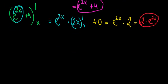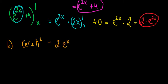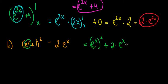In part b we have e to the power of x plus 1, all to the power of 2, minus 2 times e to the power of x. Opening the brackets from the first term we have e to the power of x squared, plus 2 multiplied with e to the power of x and with 1, then plus 1 squared, minus 2 times e to the power of x.